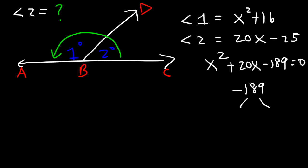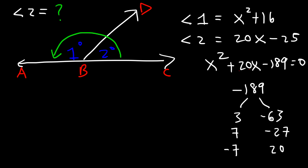189 is divisible by 3, giving 63; and 63 is 7 times 9, so 189 is also divisible by 7. 189 divided by 7 is 27. Notice that 7 and 27 differ by 20. Since we need positive 20, we use negative 7 and positive 27. So the factored form is (x minus 7)(x plus 27) equals 0.